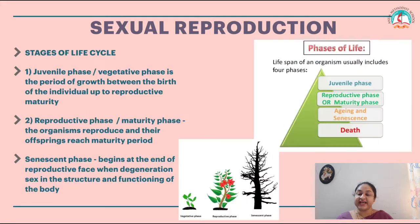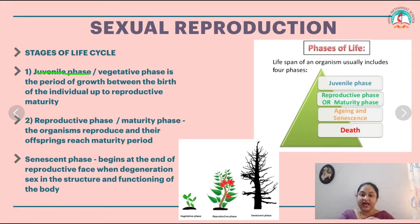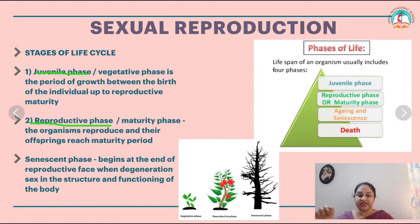Now about the stages of the life cycle. Organisms have three phases: juvenile phase, reproductive phase, and senescent phase. The juvenile phase, also called vegetative phase, is the period of growth between the birth of the individual up to reproductive maturity. The reproductive or maturity phase is from when the organism starts to reproduce offspring. The senescent phase begins at the end of the reproductive phase, when degeneration in the structure and functioning of the body starts to happen.